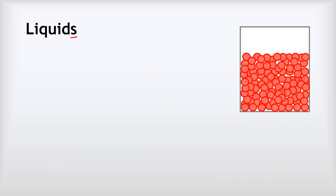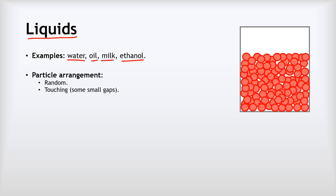Next up we've got liquids — for example things like water, oil, milk, and ethanol. The arrangement of particles in a liquid is random, so there are no nice neat rows; they just look all jumbled up. The particles are touching. It's important to recognize that there are some small gaps, but really the particles are touching in just the same way as in a solid.